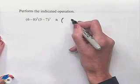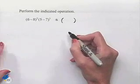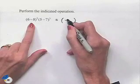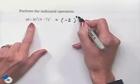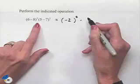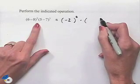Inside our first set of parentheses, 6 minus 8, we can think of this as 6 plus negative 8, which gives us negative 2. We're going to square that, and then we have a multiplication indicated.